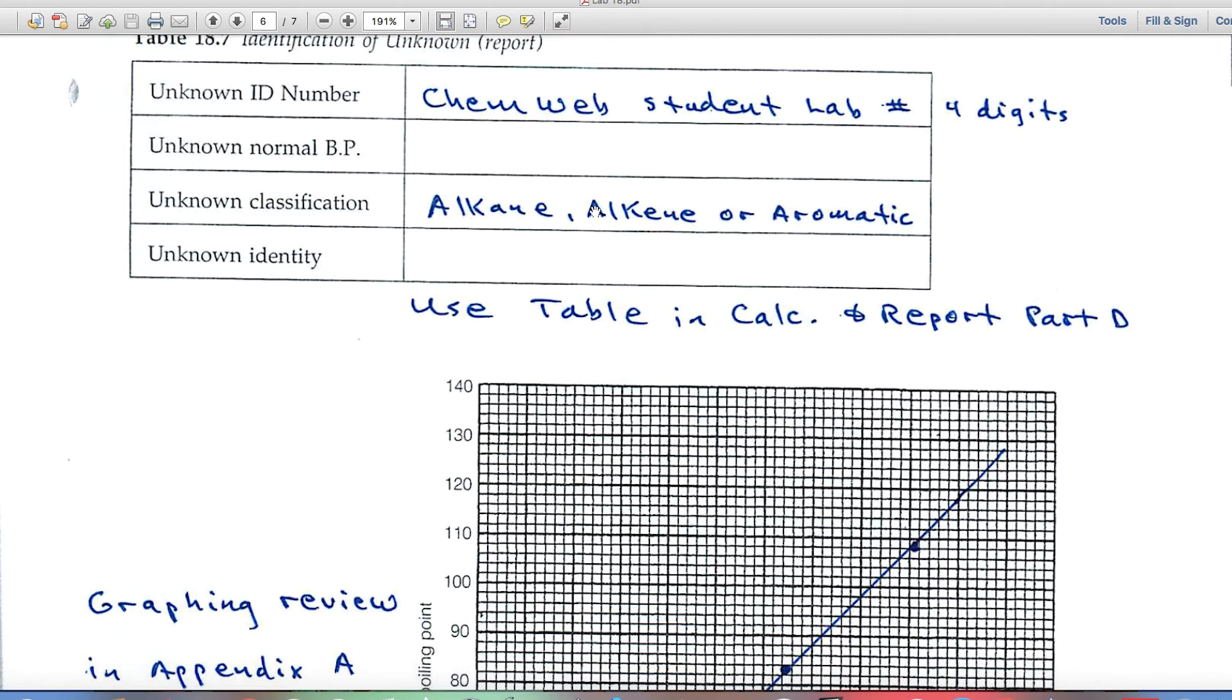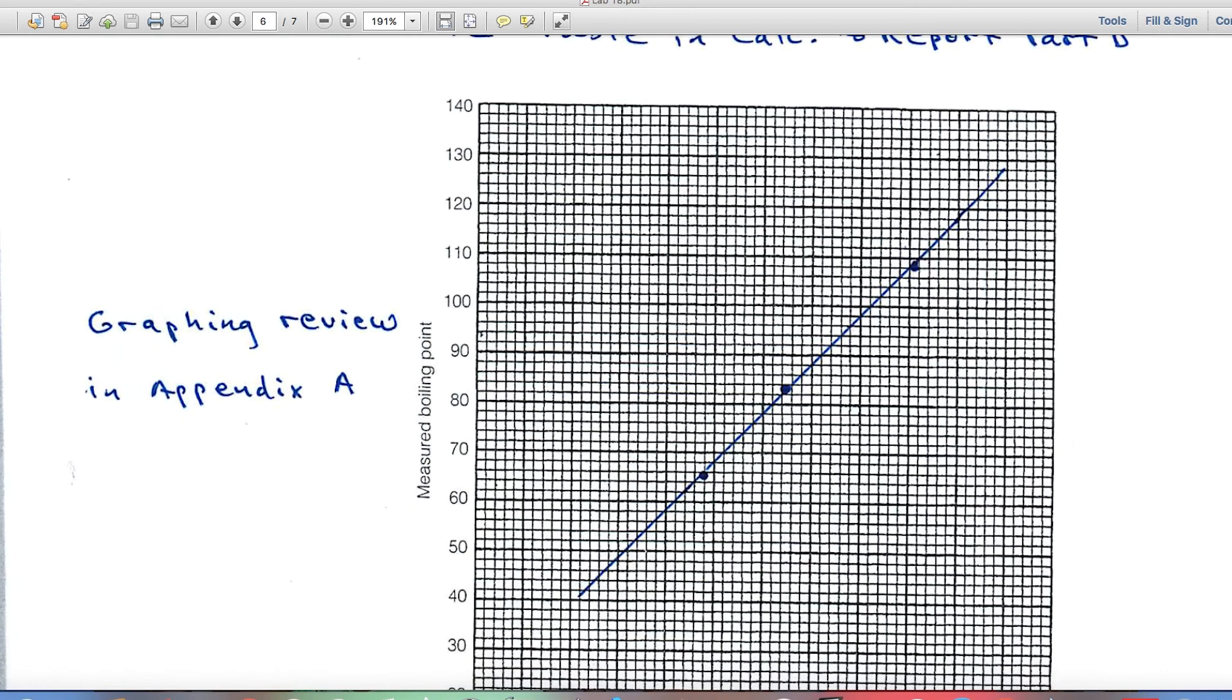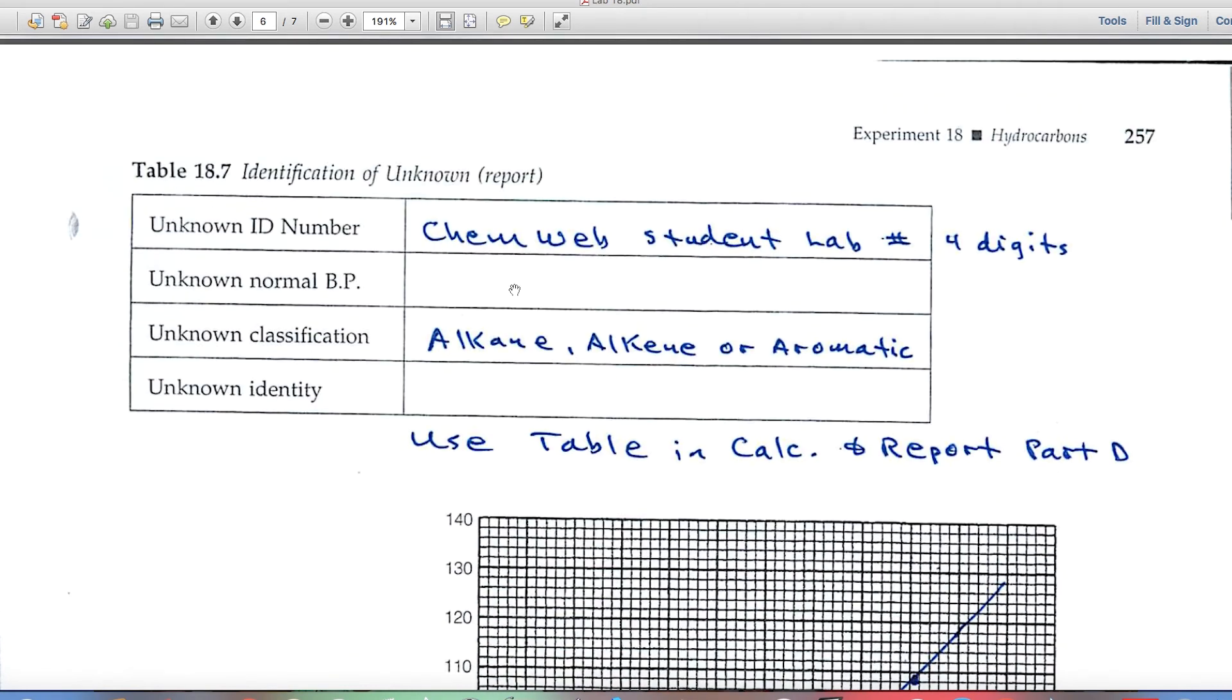This third line is where you identify your unknown as an alkane, alkene, or an aromatic. And the fourth line is where you pick out a specific compound using the normal boiling point.